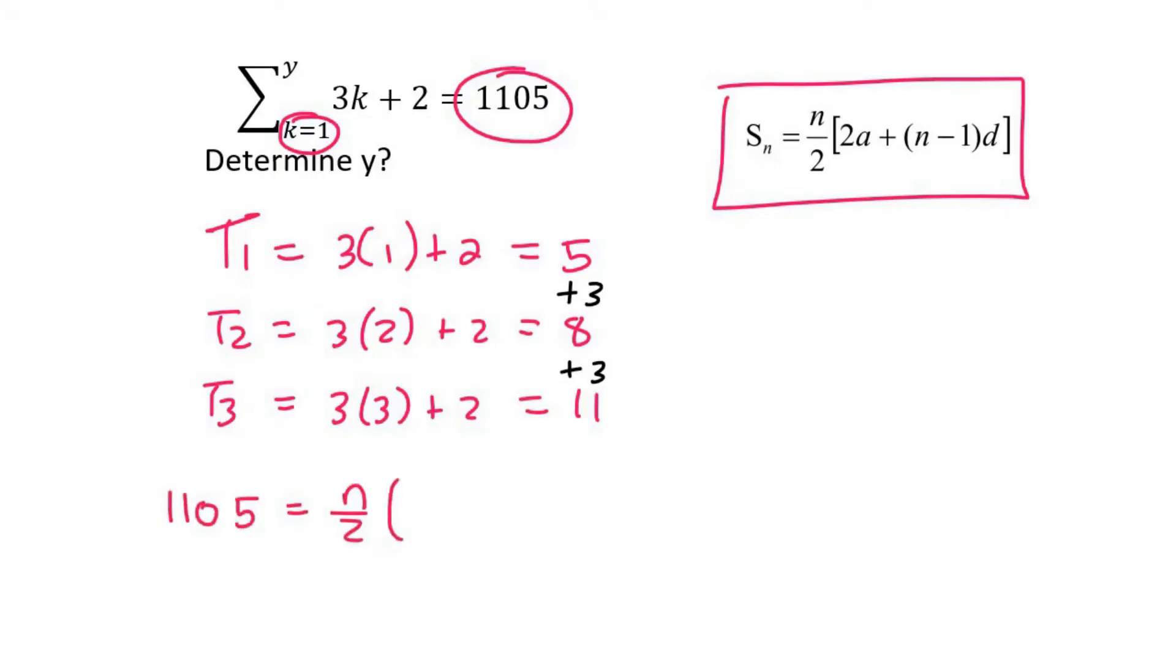We don't know the number of terms, so we'll just keep that as an n. A is your term 1, which is 5. n, once again, we don't know. And then d is your common difference, which is 3. What I like to do here is multiply the 2 over, which will be 2210.